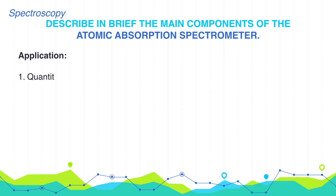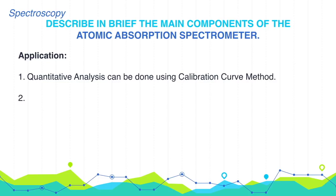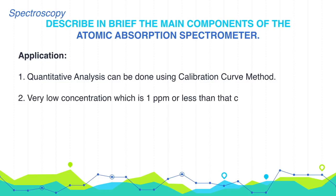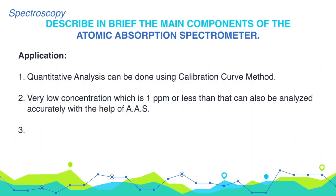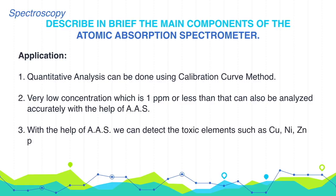Applications. 1. Quantitative analysis can be done using the calibration curve method. 2. Very low concentrations of 1 ppm or less can also be analyzed accurately with AAS. 3. With the help of AAS, we can detect toxic elements such as copper, nickel, and zinc present in food products.